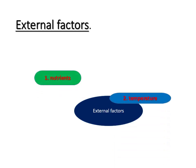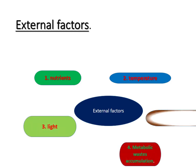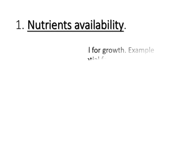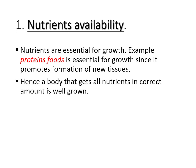The external factors that affect growth include nutrients, temperature, light, the accumulation of metabolic waste, and pH. The first one is nutrient availability. We know that nutrients are essential for growth. For example, protein is essential for growth since it promotes the formation of new tissue, which increases body mass.